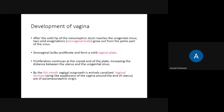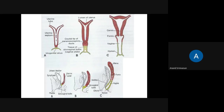By the fifth month, the vaginal organ is canalized and the vaginal fornices are formed — these are present in the surrounding parts of the cervix. After canalization, the fornices and the vaginal part are formed. The upper one-third is derived from the paramesonephric duct and the lower two-thirds from the sinovaginal bulb.